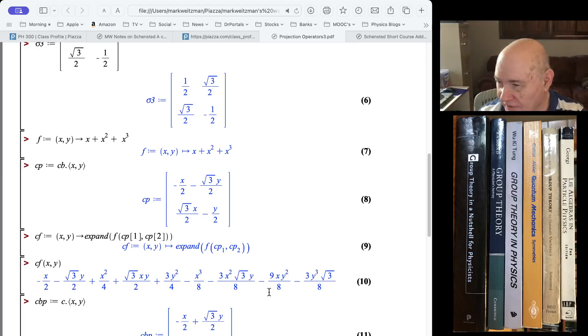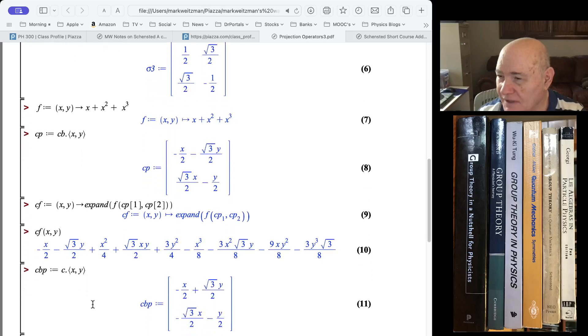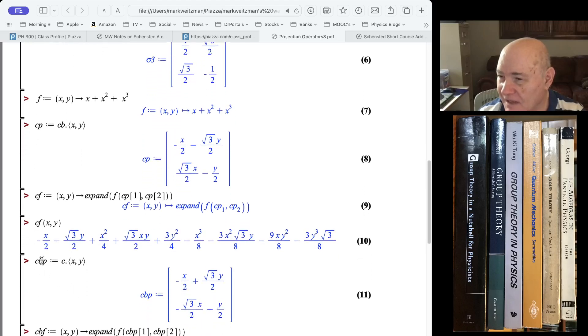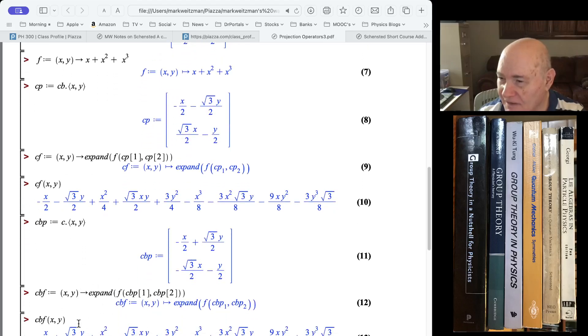And CP2 is the bottom. So this is basically the new X, X prime, Y prime. I probably should have used that, but that's okay. And then that gives me the function.